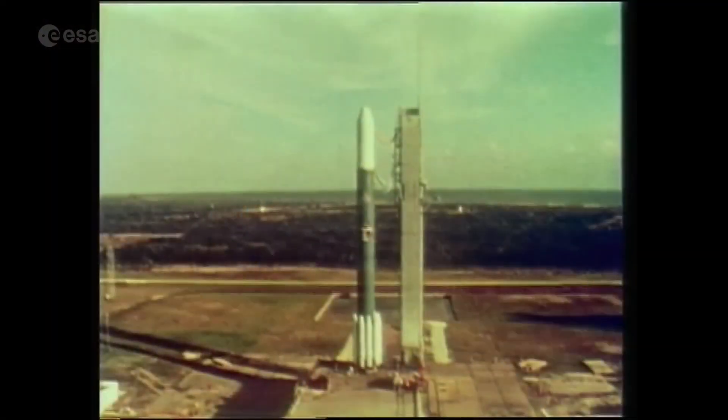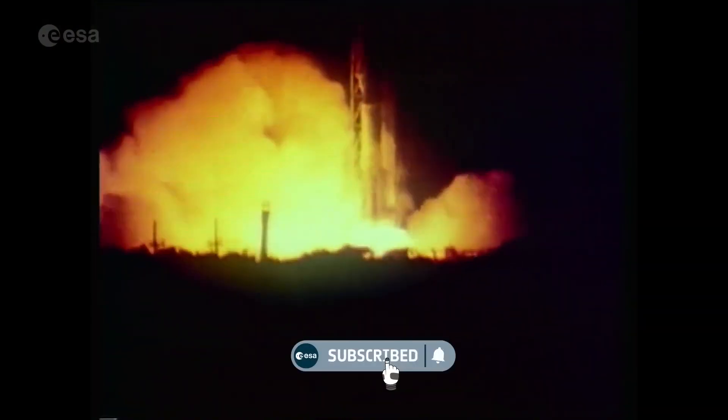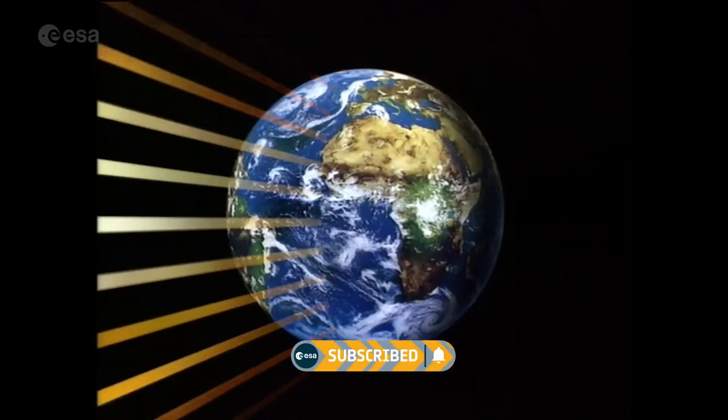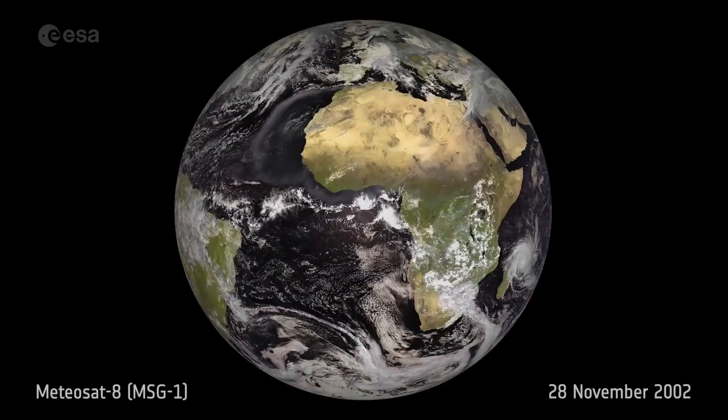In 1977, the first European weather satellite Meteosat took its place in orbit. Eleven satellites have since followed.